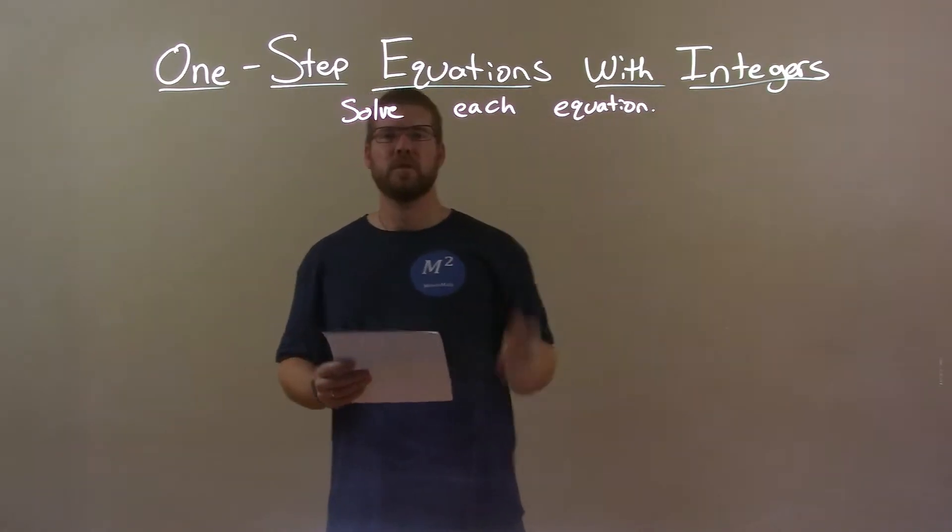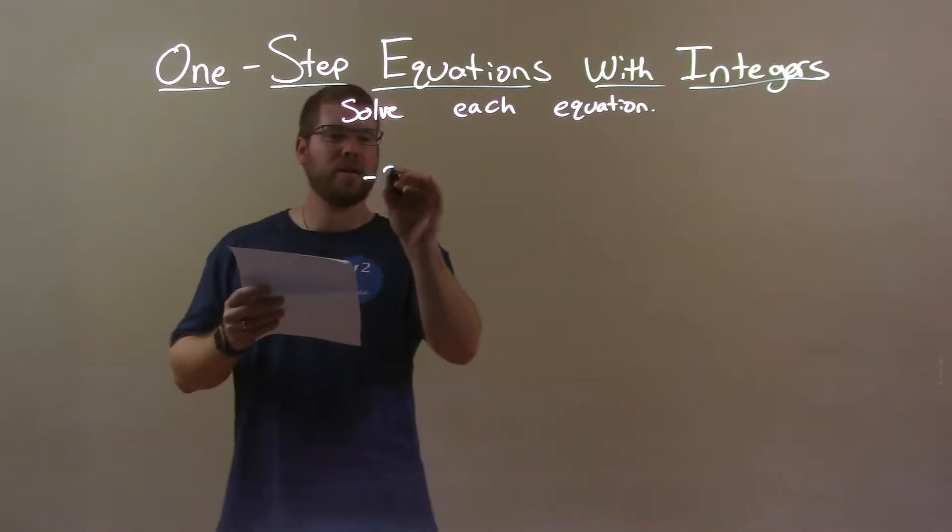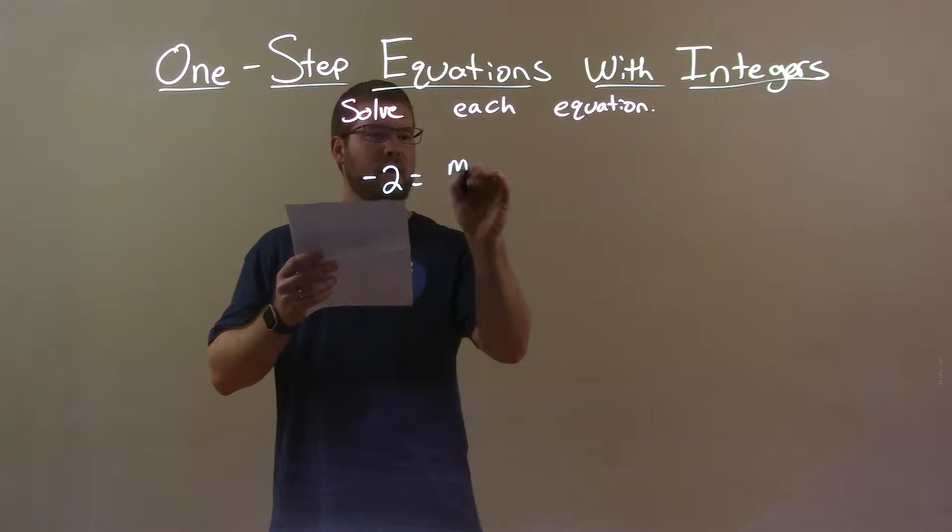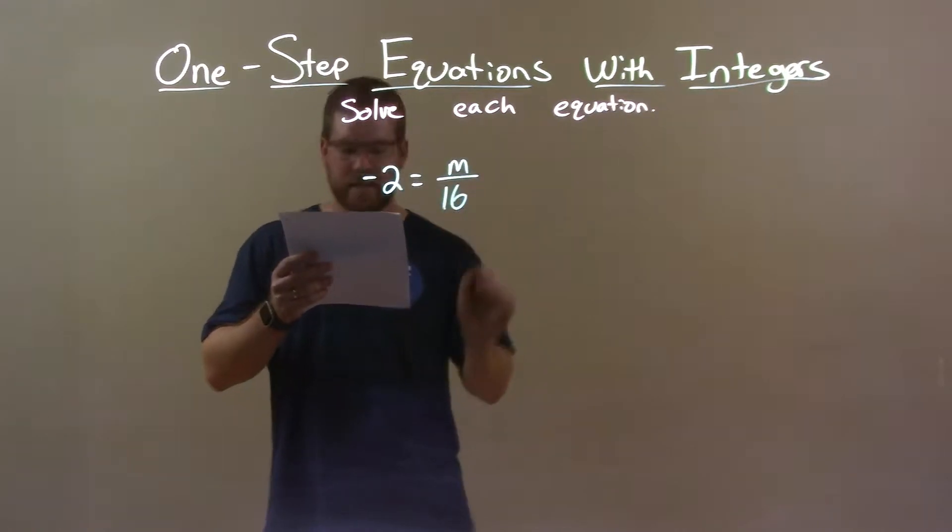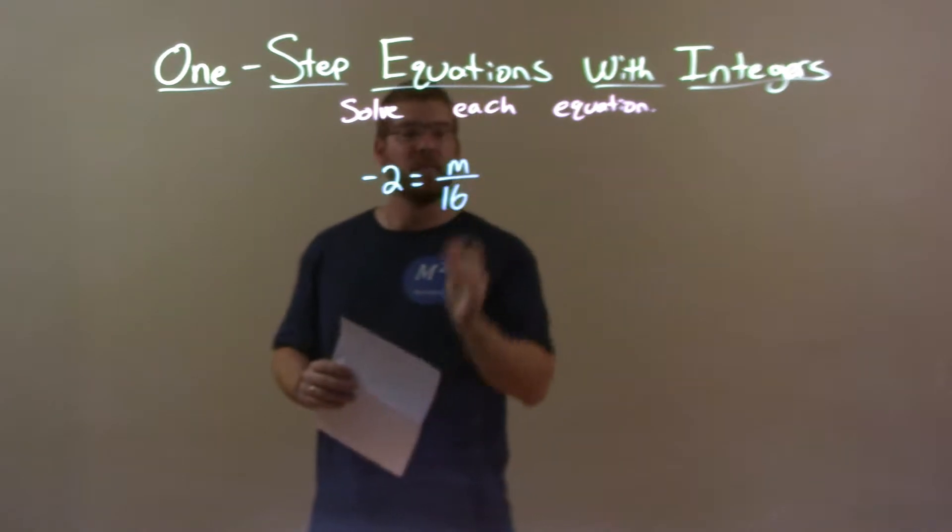We're going to solve each equation. If I was given this equation, negative 2 equals m over 16, well, I want to get m by itself first. It's being divided by 16.